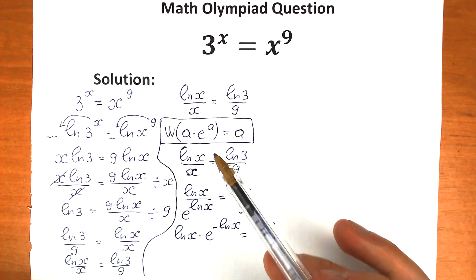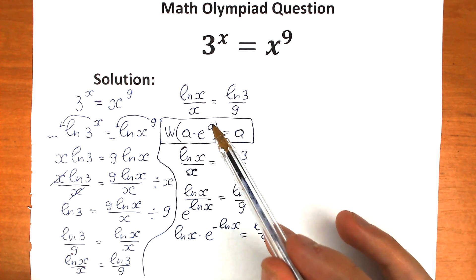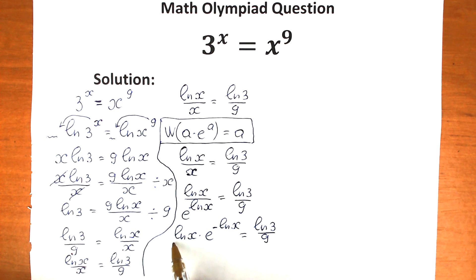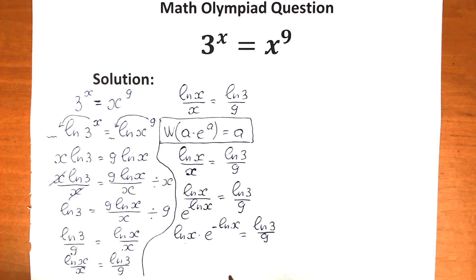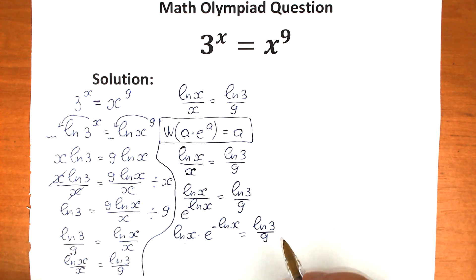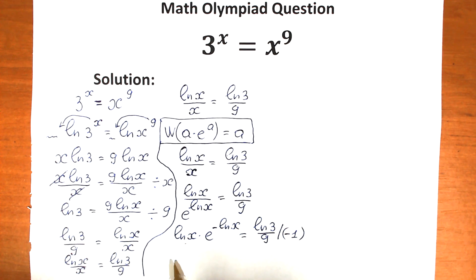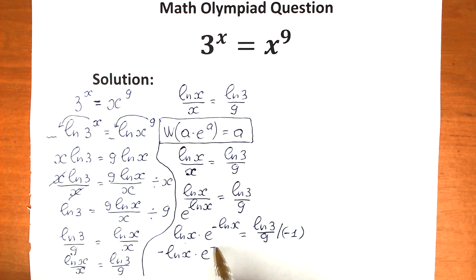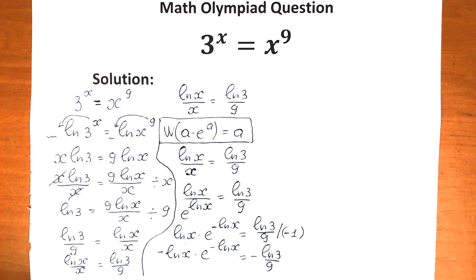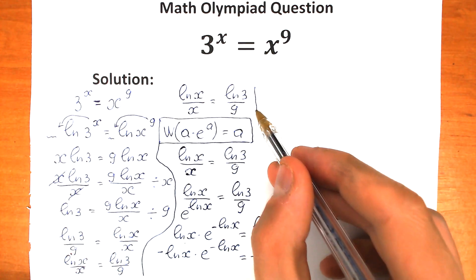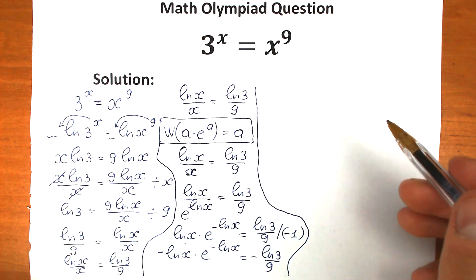Take a close look. For the Lambert W form we need two identical expressions — here we have natural log x and the power is minus natural log x, which are different. To make them the same, we multiply both sides by minus 1, giving minus natural log x times e to the power minus natural log x, equal to minus natural log 3 over 9. Now let's move to the final step.